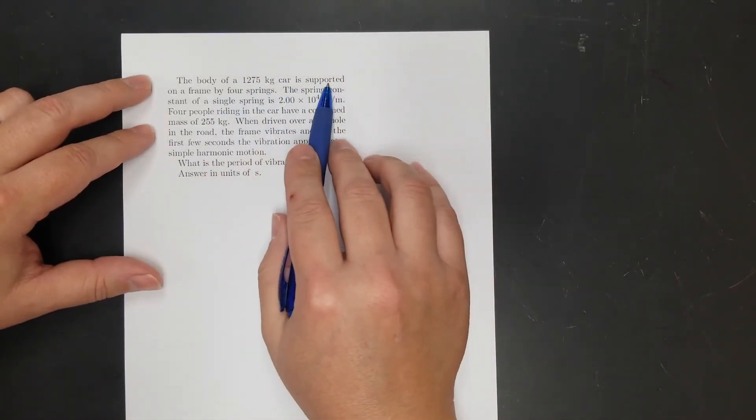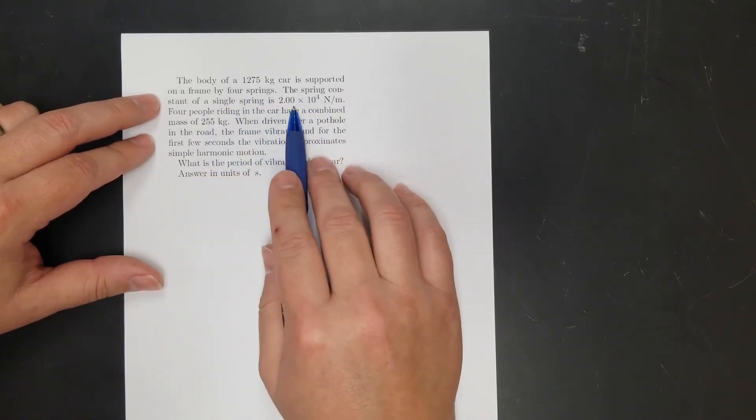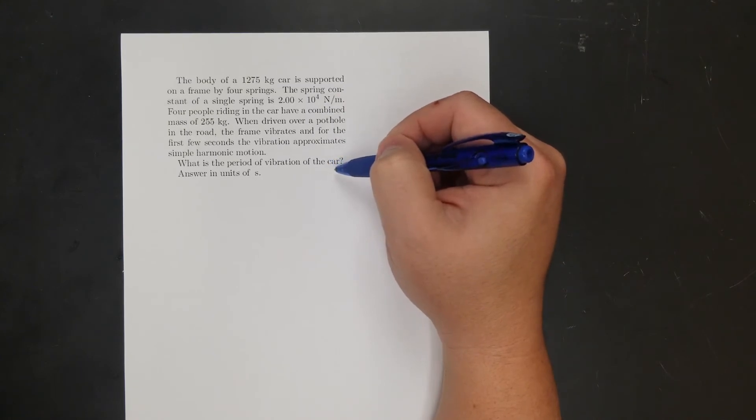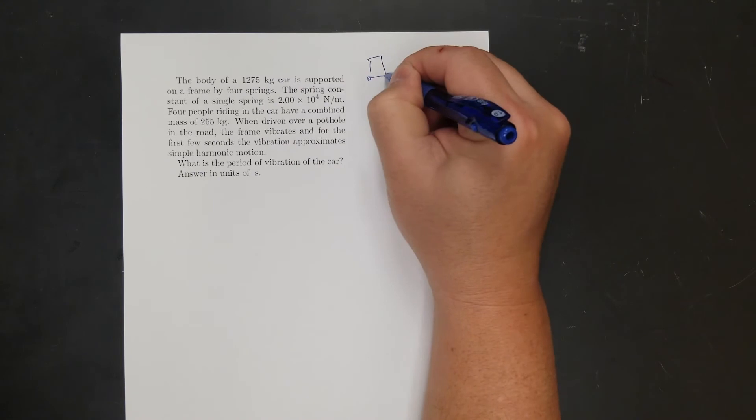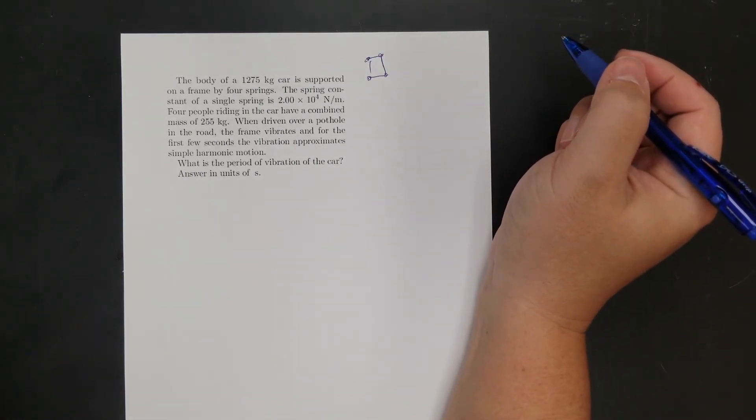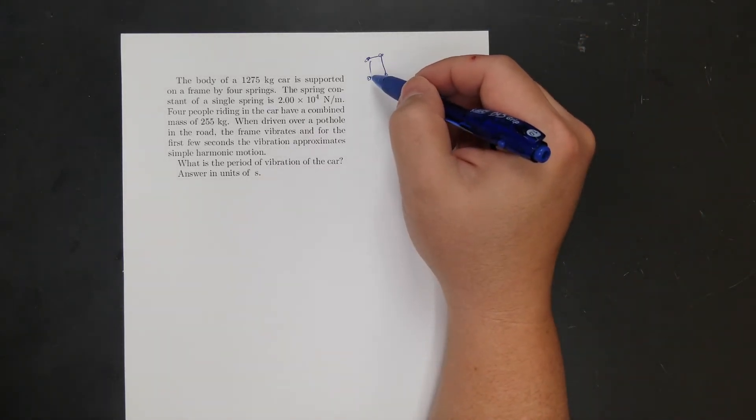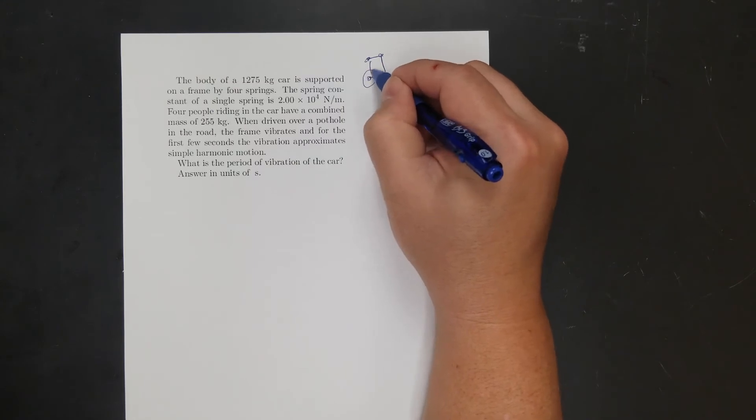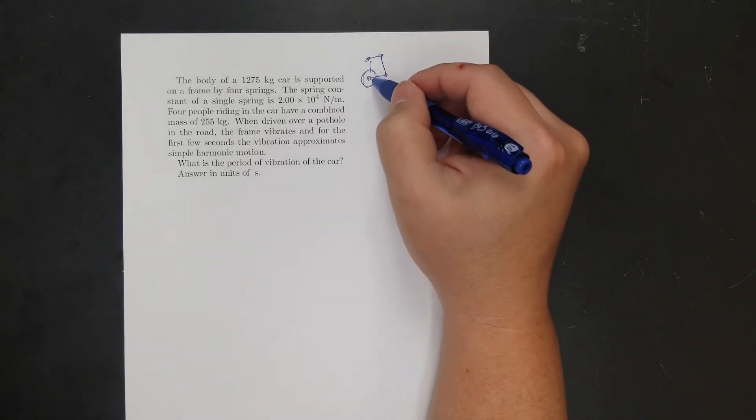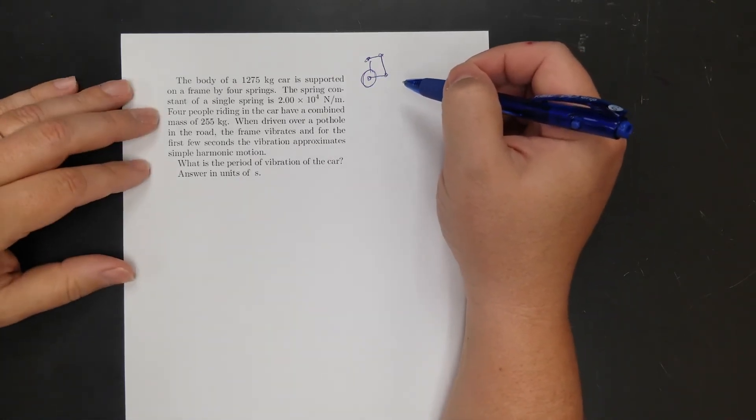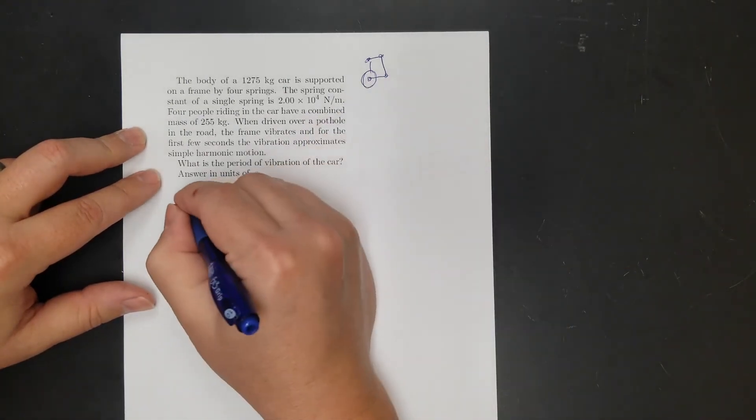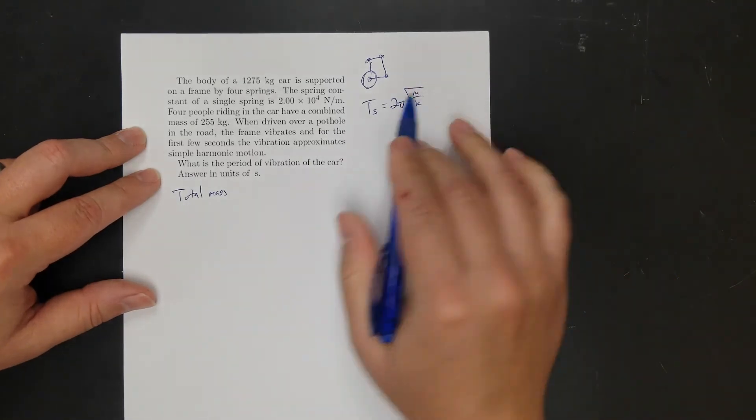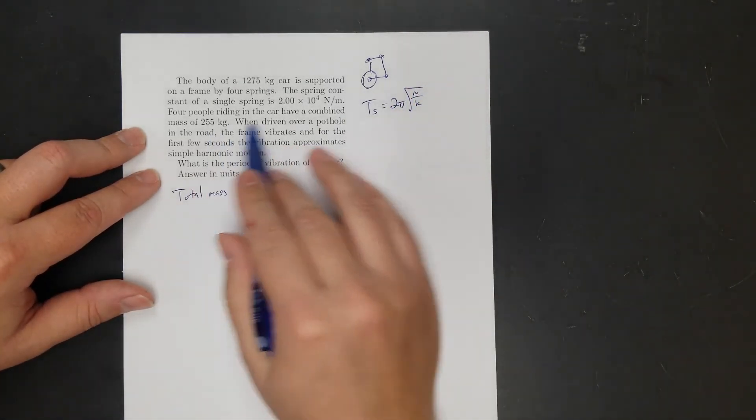Okay, next problem. Body of a 1,275 kilogram car is supported on a frame by four springs. The spring constant of a single spring is that. Four people riding in the car have a combined mass of 255 kilograms. When driven over a pothole, all frame vibrates. What's the period of vibration of the car? So this car is on four springs. So I need to figure out one spring. Because I assume we're modeling this as four springs that all behave the same. So let's just look at one spring. Let's see how much weight one spring would have and how one spring would behave. And that should give us our answer. So the total mass, let's get that first. Because I know I'm going to use period of a spring as 2π square root of m over k. Oh, I don't even have to do the algebra. So I just need the mass and the spring constant. Oh, I got the spring constant right there.